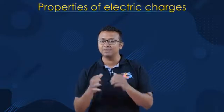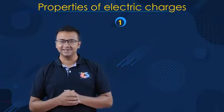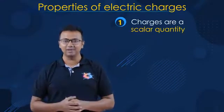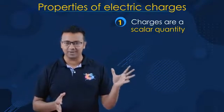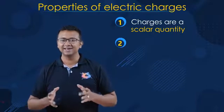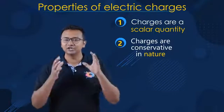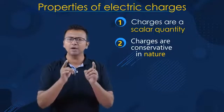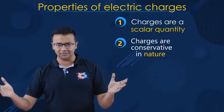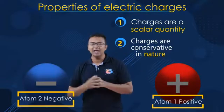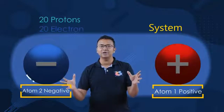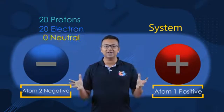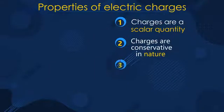We have seen how charges are created. Let's look at some properties of these charges. The first property says charges are a scalar quantity — meaning charges can be added just like numbers; we don't need to bother about direction. The second property says charges are conservative in nature, meaning charges can neither be created nor destroyed. You might object that we just created positive and negative charges, but if you take both atoms as a system, the total positive and negative charges are equal, so the net charge is zero.